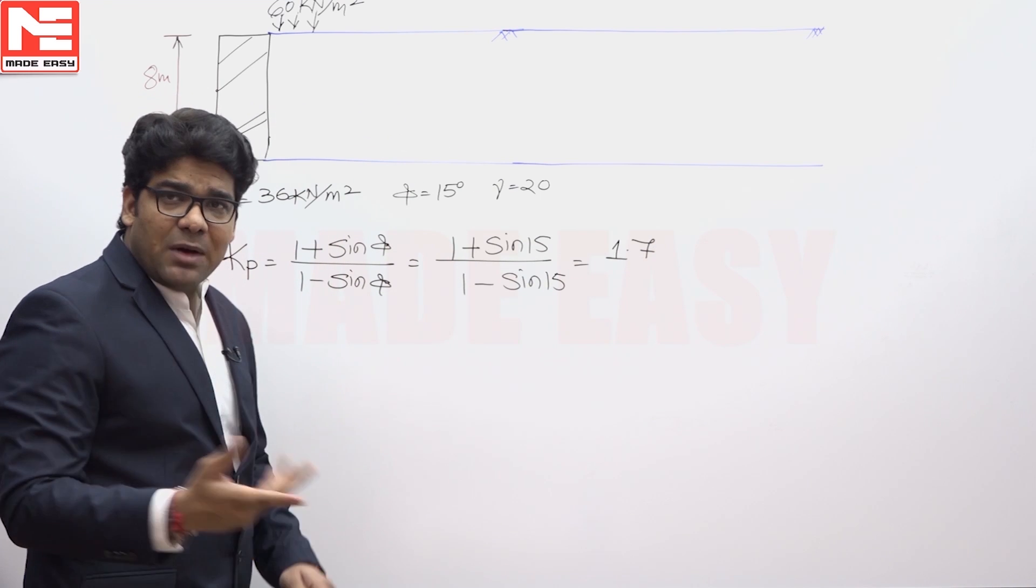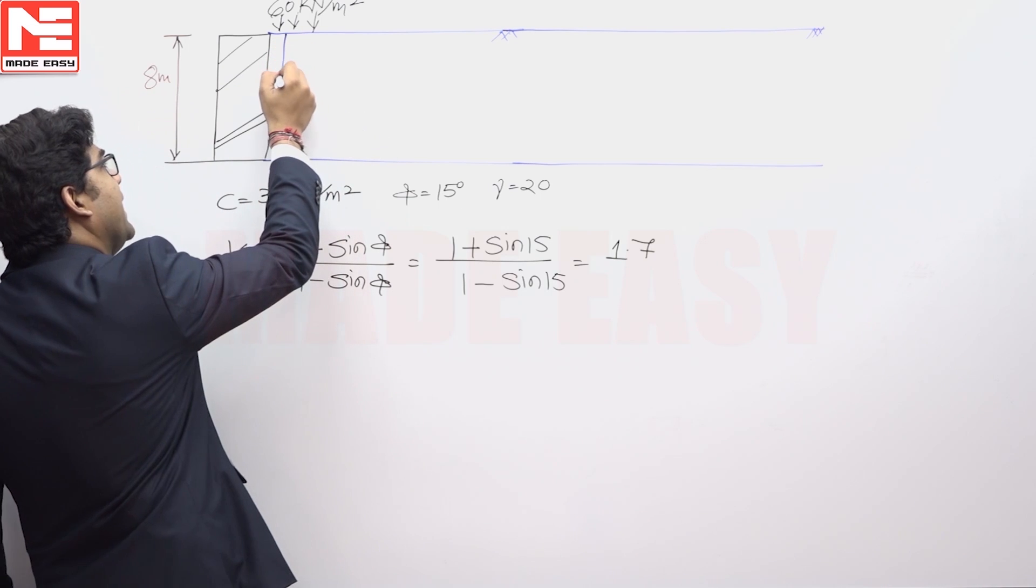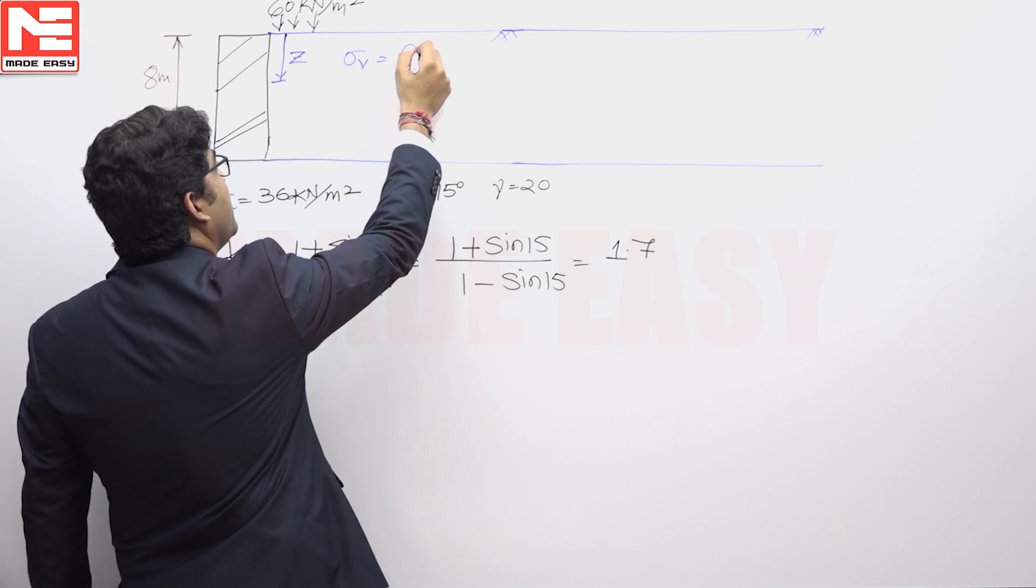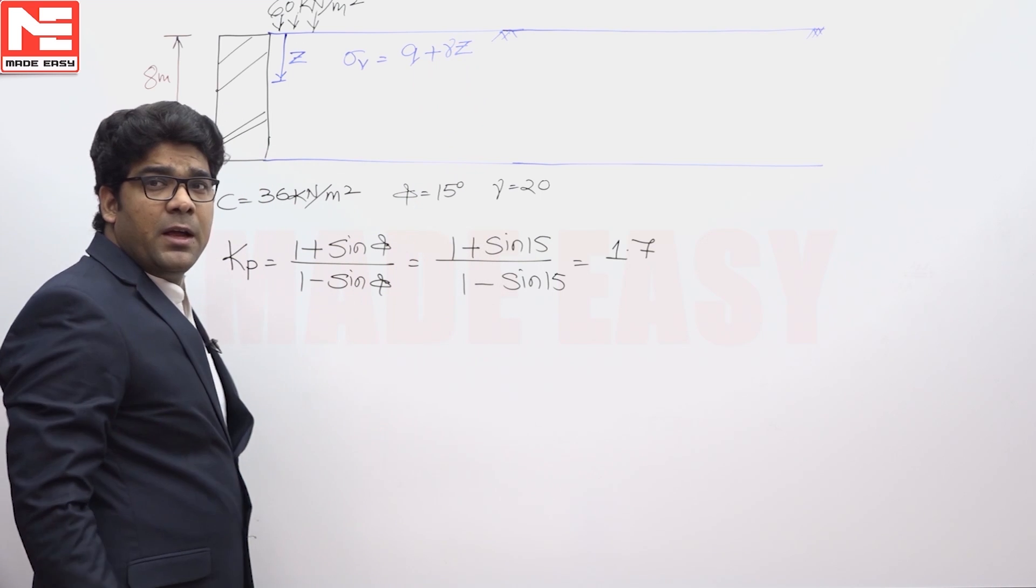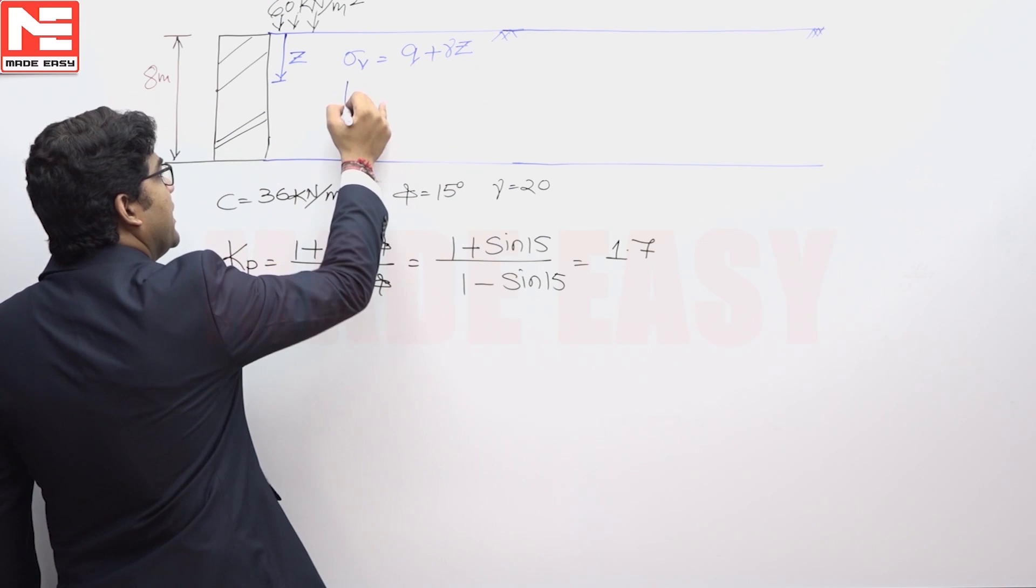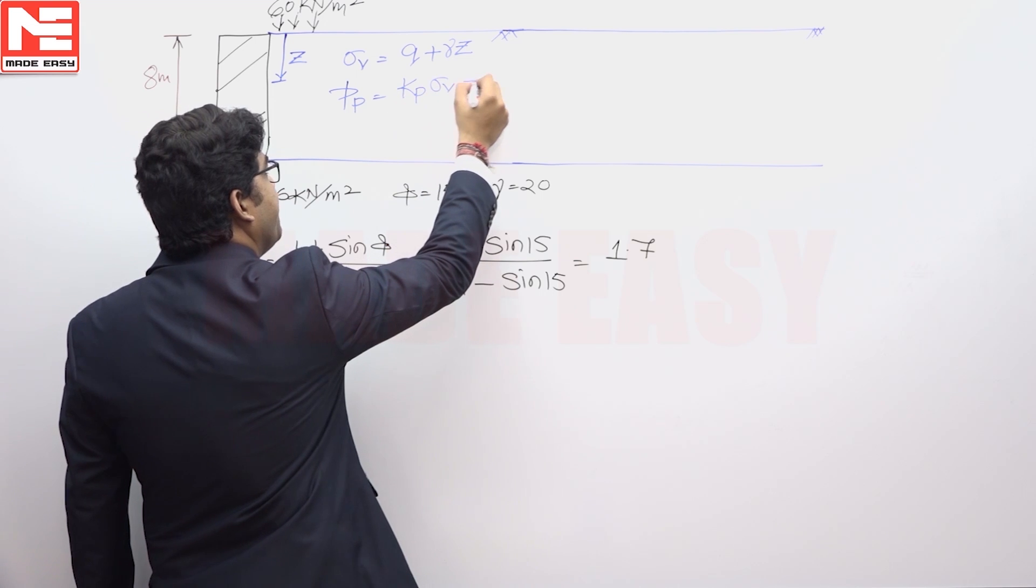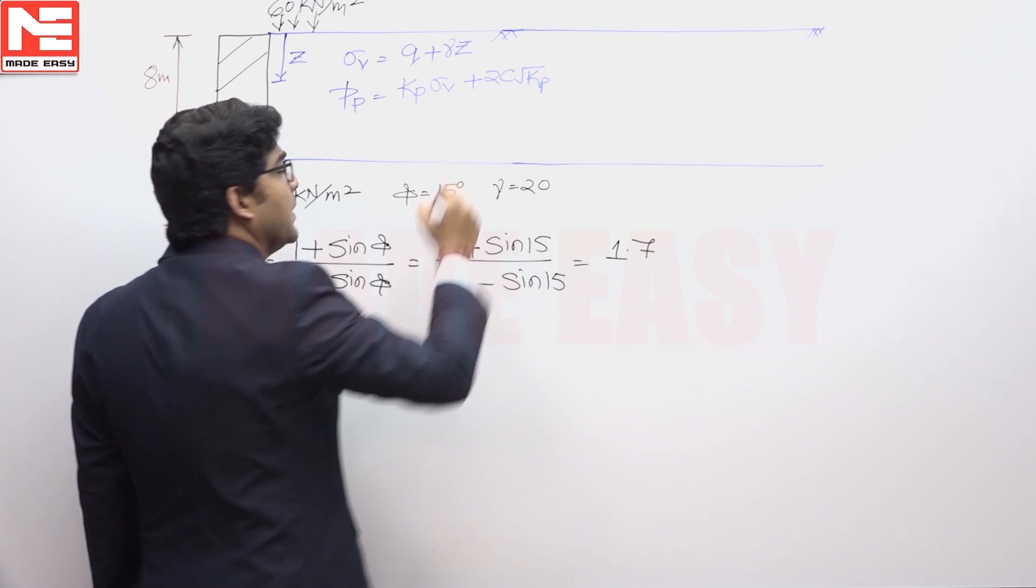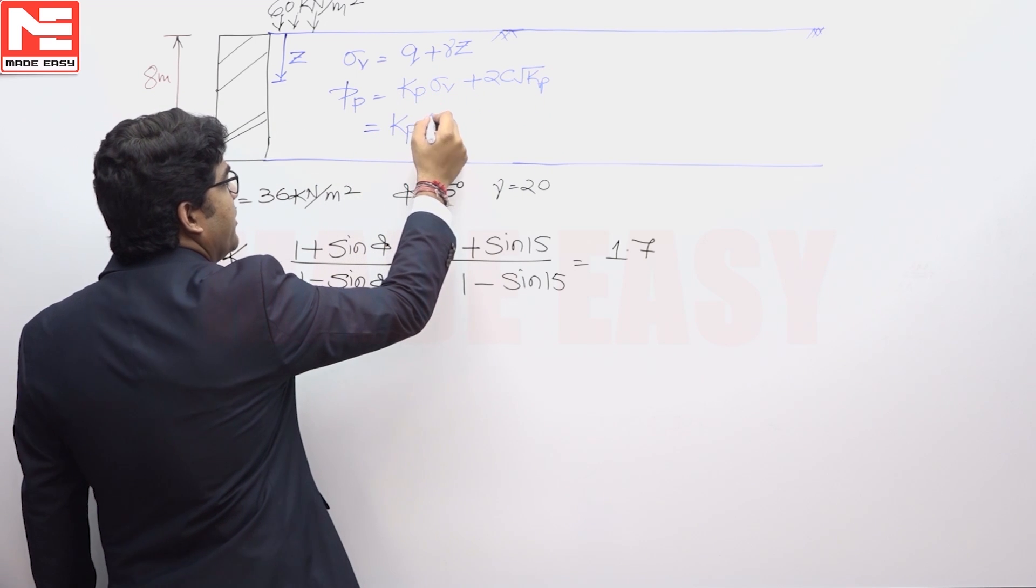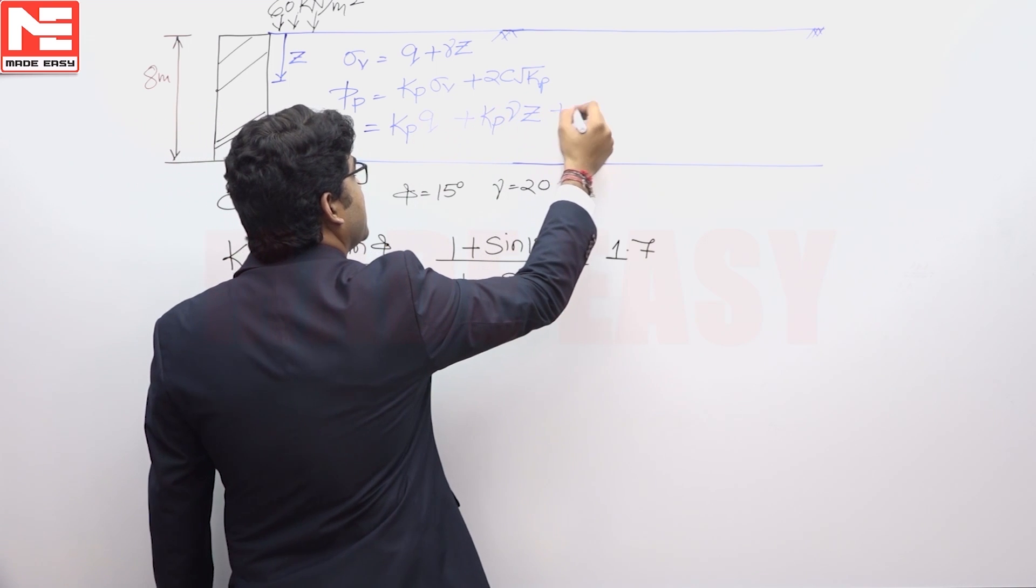First of all, we will calculate that sigma v at any particular depth, that is suppose for example z. So at the depth of z, if we consider that sigma v, so that sigma v will be equivalent to Q plus gamma into z. That soil is cohesive and in cohesive case that passive earth pressure, small pp, will be equivalent to Kp into sigma v plus 2c root Kp. It means you can say this sigma v is equivalent to Q plus gamma z, so Kp q plus Kp into gamma into z plus 2c root Kp.